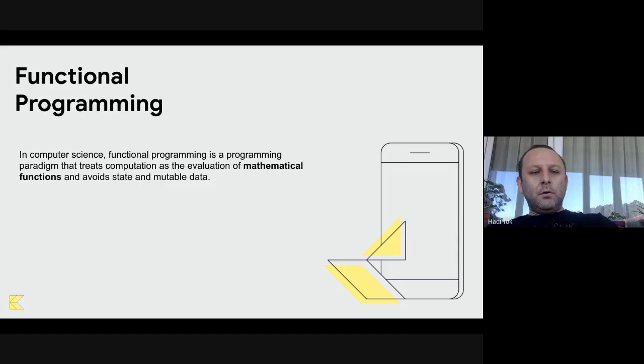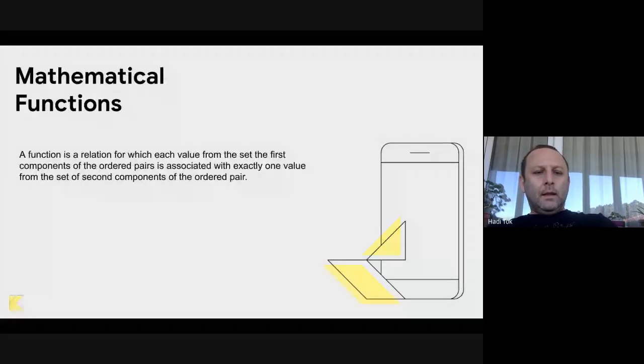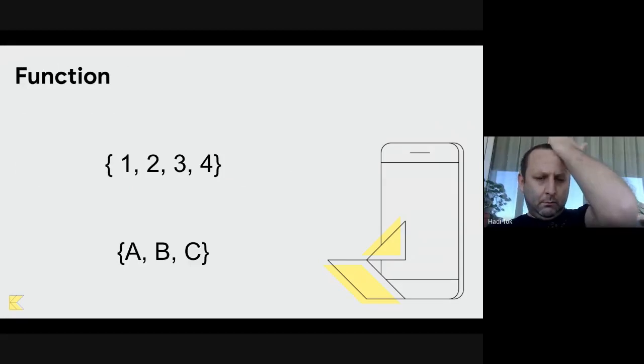Functional programming treats computation as evaluation of mathematical functions. Let's look at what mathematical functions are. In a mathematical function, we have two sets. And function is the relation between elements of the first set and elements of the second set. But from the first set, there could be only one relation to the second set's elements. Let's visualize it, it could be more clear.